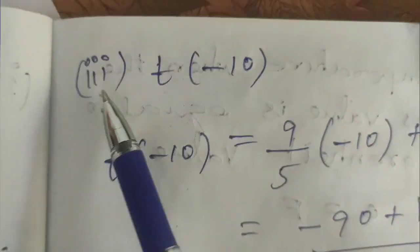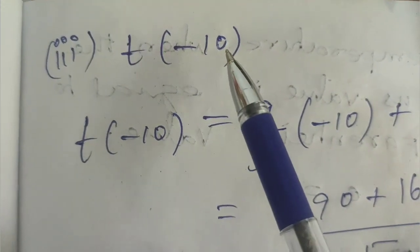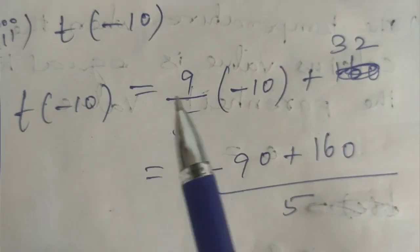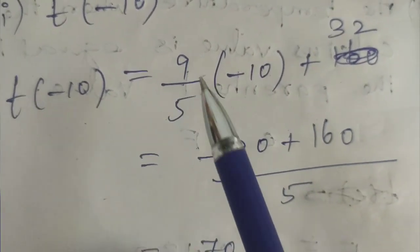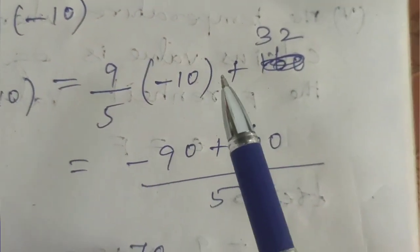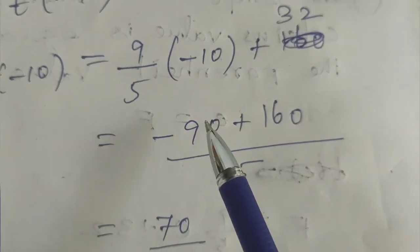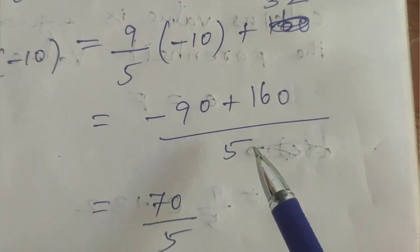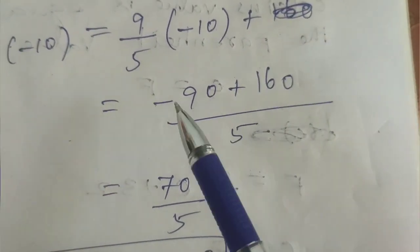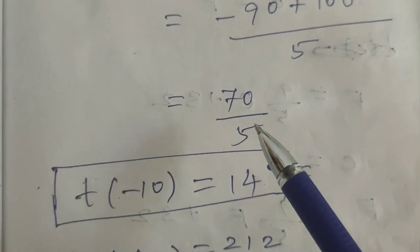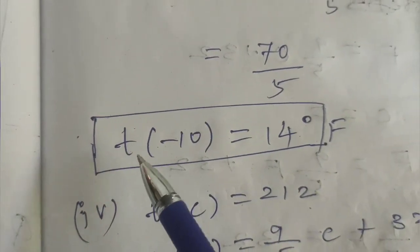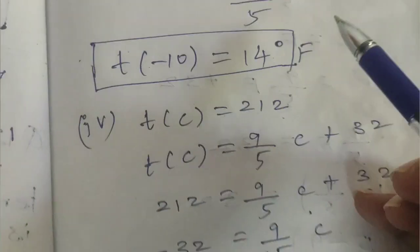The third sub-question is T of minus 10. If we substitute C equals minus 10, then T of minus 10 equals 9 by 5 into minus 10 plus 32. 9 into 10 is 90, so minus 90 divided by 5 plus 32. Cross multiplying, 5 into 32 is 160, so T of minus 10 equals 14 degrees Fahrenheit.